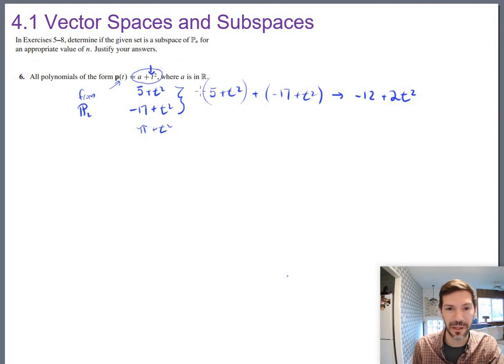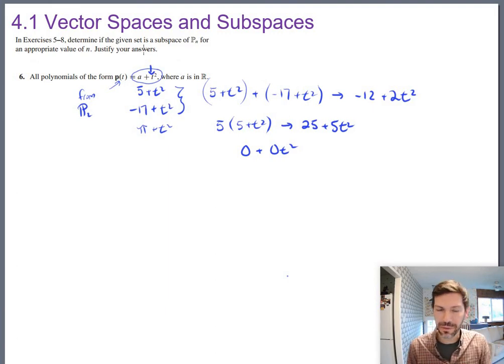Same thing is definitely true for scalar multiplication. If you multiply one of these by five, again, you're going to get something that doesn't just have t squared. It's going to be 25 plus 5t squared. So that's broken under scalar multiplication as well. And there's no zero vector here. The zero vector would have to be zero plus zero t squared is what it would take to have a zero vector in that set. And again, that doesn't match their definition here. So six is a subgroup, a subset of a known vector space, but it is not a subspace. It does not work as a vector space because it fails at three of the conditions.